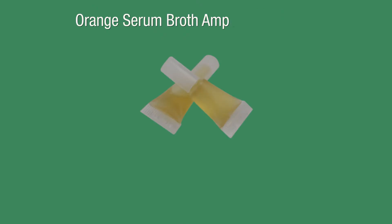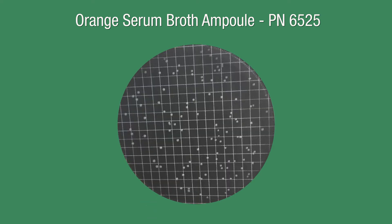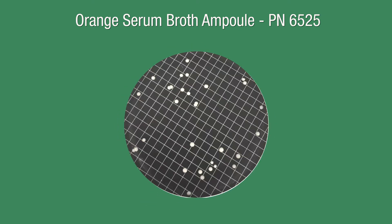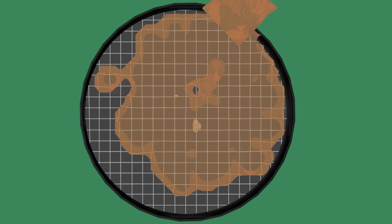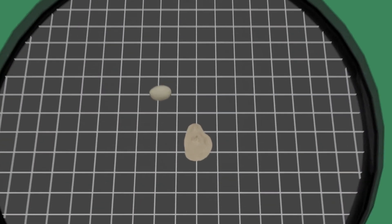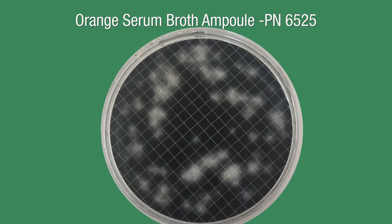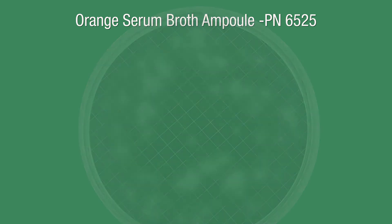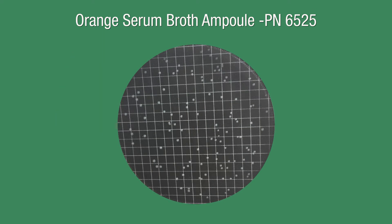Orange serum broth ampule. This medium is for the enumeration of aciduric microorganisms, such as Leuconostoc, Lactobacillus, and yeasts. A non-selective medium in which microorganisms, such as molds, can also grow. Molds can be easily identified by their fuzzy or cottony appearance. They may or may not contain powdery spores. To interpret results, count all colonies that recover.